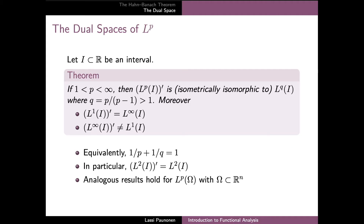The result, which also generalizes to functions of several variables, shows that if the exponent p is finite and strictly greater than one, then the dual space of L^p is isometrically isomorphic to another Lebesgue space L^q, where q is determined by the condition 1/p + 1/q = 1. Since isometrically isomorphic spaces can be considered the same, the dual of L^p is L^q. In particular, L^2 is its own dual.